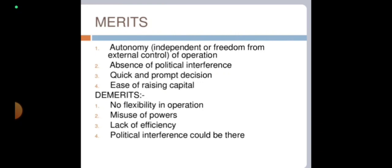Fourth, ease of raising capital — such organizations are free to offer their shares in the market. For example, we can buy shares of ONGC, Oil and Natural Gas Corporation, etc. Now, what are the demerits? First, no flexibility in operations — operational flexibility is not enjoyed.